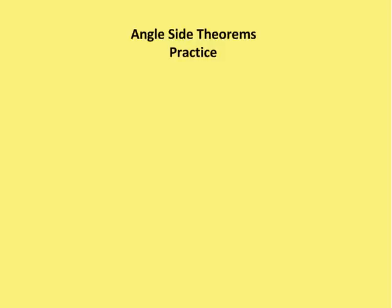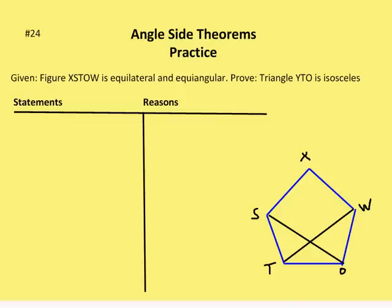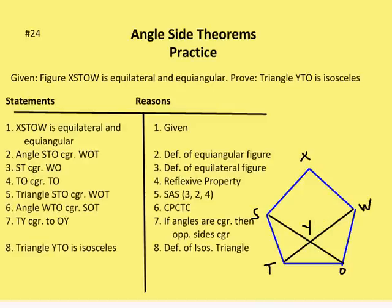The first problem says we have figure XSTOW. It's equilateral and equiangular, and we want to prove that triangle YTO is isosceles. Given figure XSTOW is equilateral and equiangular, prove triangle YTO is isosceles. The angle in question we're looking at is YTO — that's what we want to prove as the isosceles triangle.